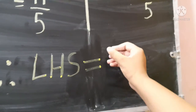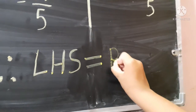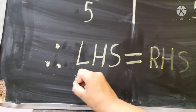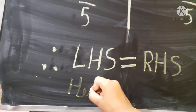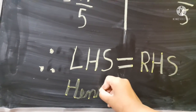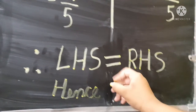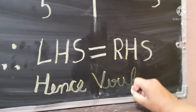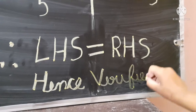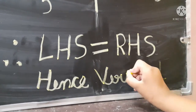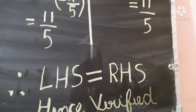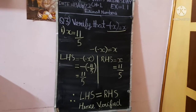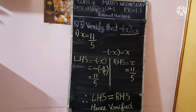We write LHS equals RHS, and then below that we write: hence verified.